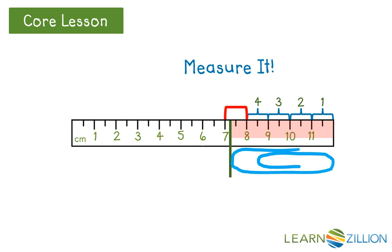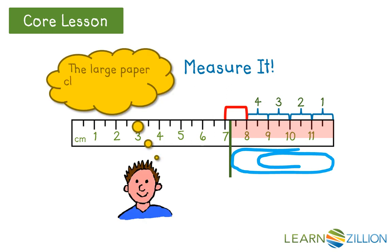Is it closer to one whole space more? Would you say that the paper clip is closer to the number eight on the ruler or the number seven? Yes, it's closer to the number seven — it's almost one whole space longer. We can say that the paper clip is about five centimeters long.